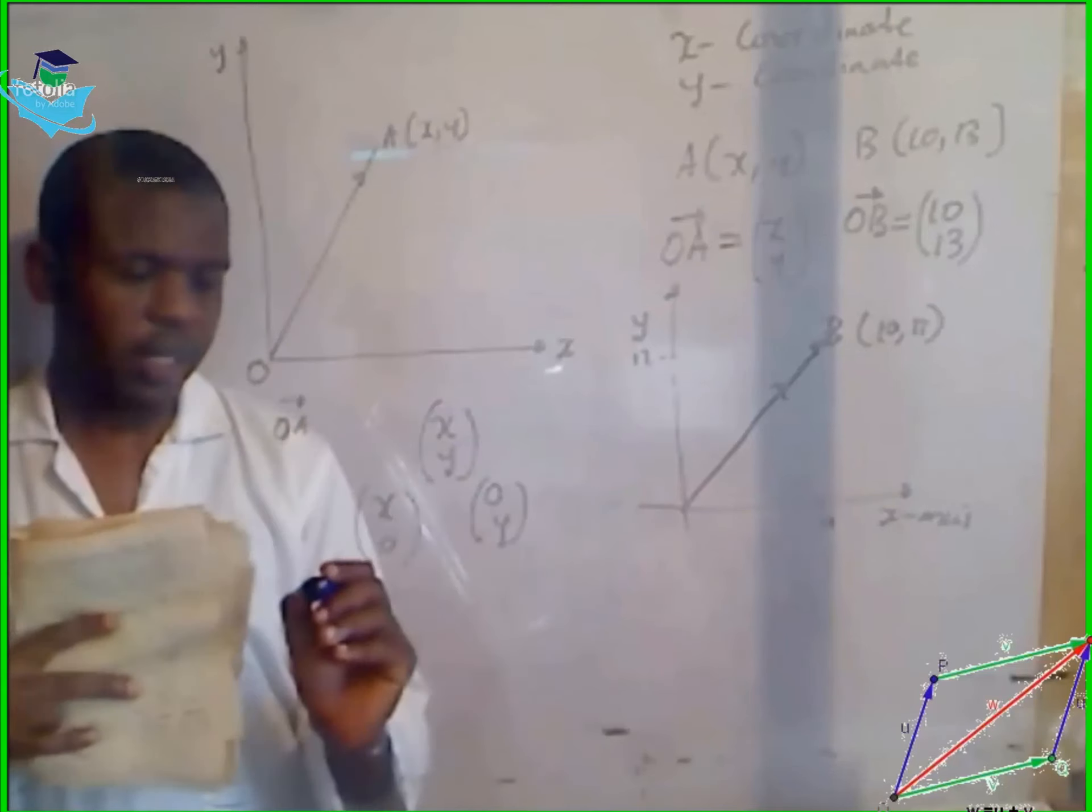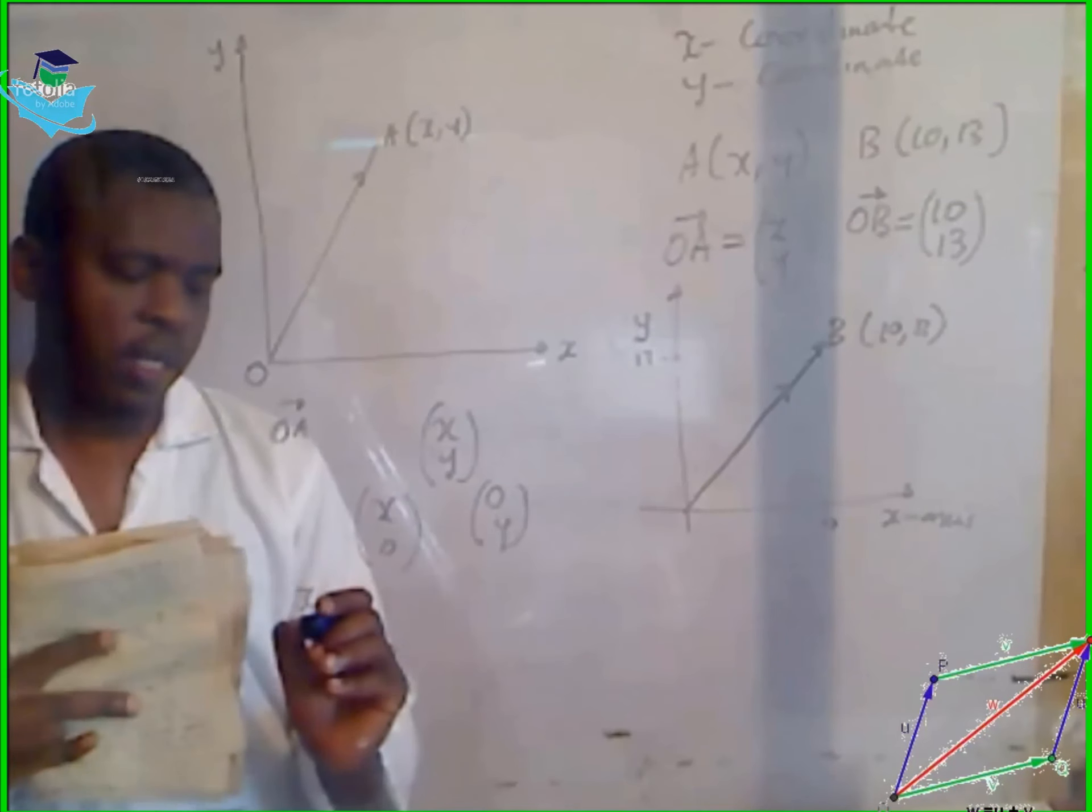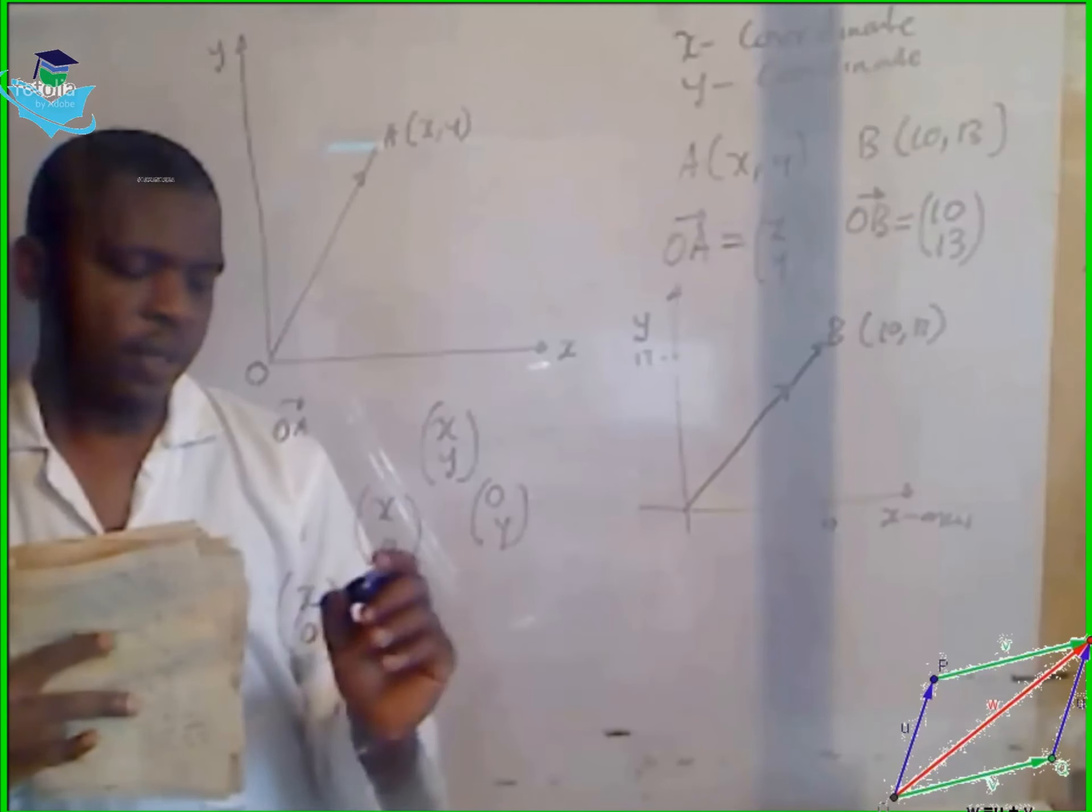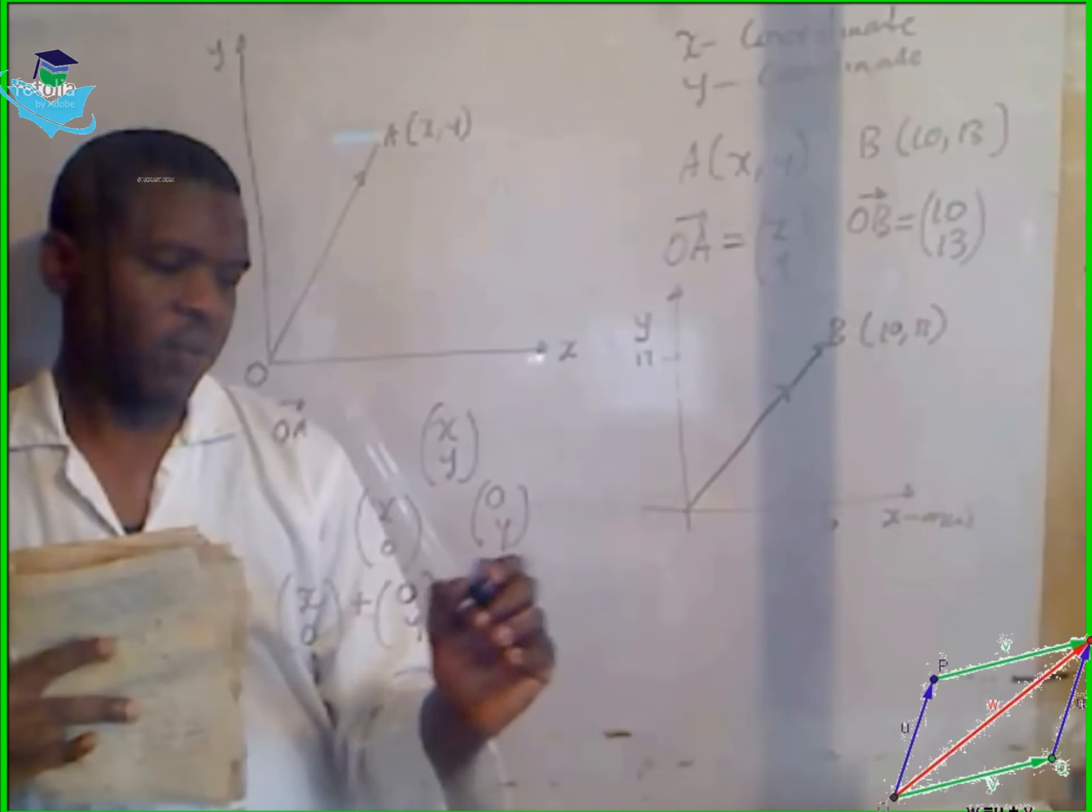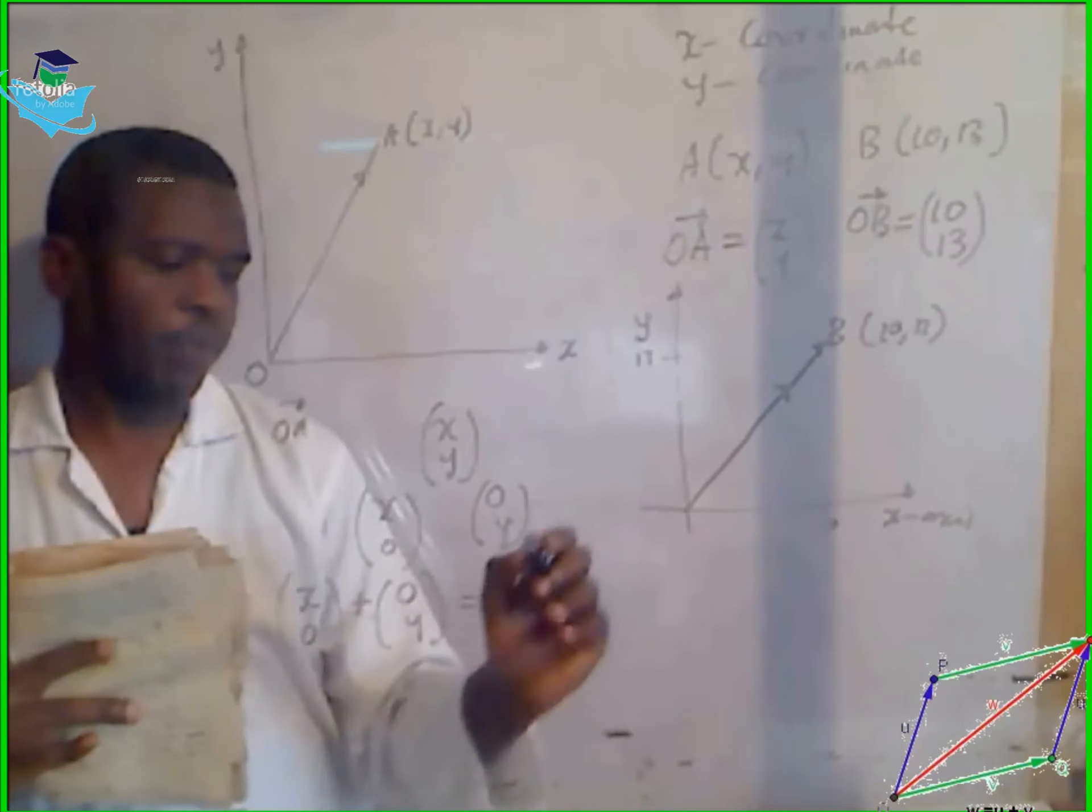So, we see from here that if we add these two vectors, we get a component of our position vector.